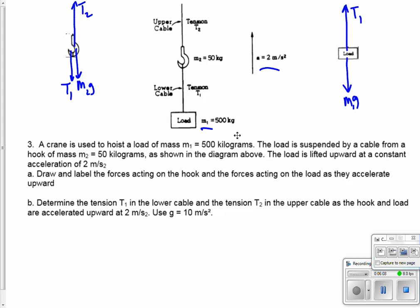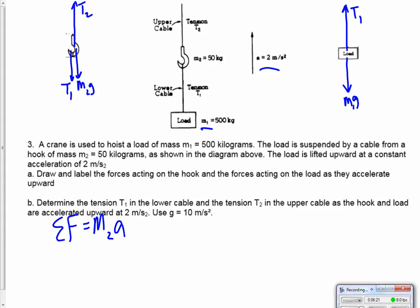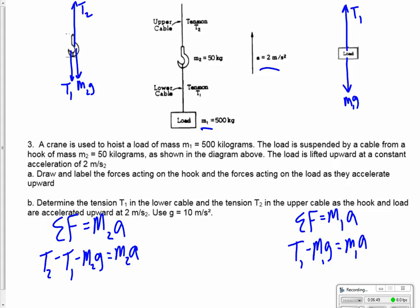So the first thing we're going to want to do is now, or the second thing, is translate those. Sum of the forces equal M2A for the hook, and the sum of the forces equal M1A for the load. I'm over here on this side, so let's start there. So T1 minus M1G equals M1A. Over here, we have three forces. T2 minus T1 minus M2G equals M2A. I drew them very far apart, but now we can start to look at, okay, now how do I solve it? Determine the tension T1 in the lower cable and the tension T2 in the upper cable. So I'm looking for both tensions given the acceleration as two. So let's go ahead and put in values that we know.